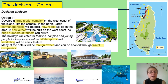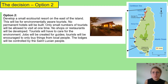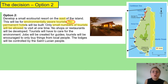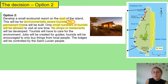Option two is to develop a small ecotourist resort on the undeveloped east coast. This will be environmentally aware, and eco-tourists who care about the environment will visit — they will not want to get involved in activities that damage the environment, such as snorkelling and water sports. Permanent hotels will not be built; instead there will be lodges, so there will be no visual pollution. The resort will not be connected to the mains water supply, and only a small number of tourists will be allowed, which is good for noise pollution and congestion. However, this is not as good for making money and increasing GDP for the government.